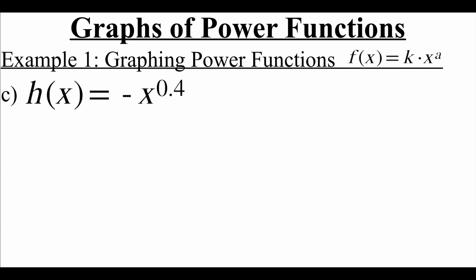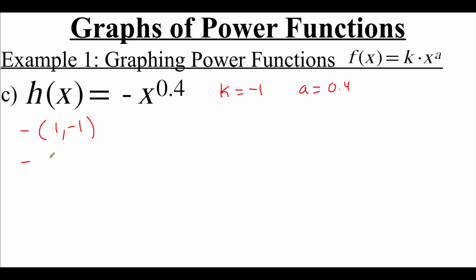The last function is h of x equals negative x to the 0.4 power. We're going to identify that k value — there's a negative hanging out in front, so that means an implied negative 1, giving us k equals negative 1. And we've got an a value of 0.4. With this power function, it will contain the point one comma k, so that's the point one comma negative 1. And since we've got a positive a value, our graph will also contain the point zero comma zero.